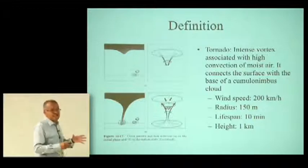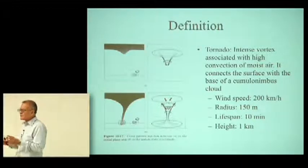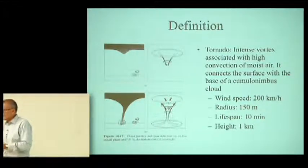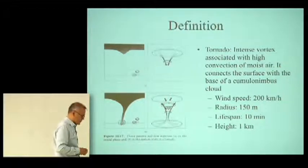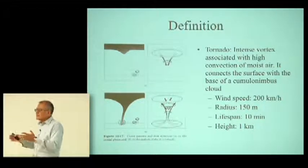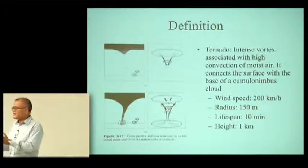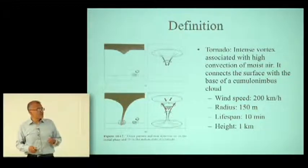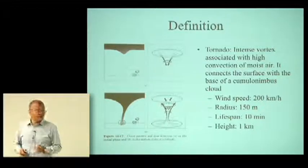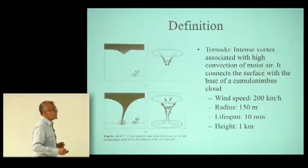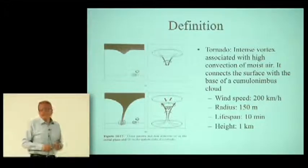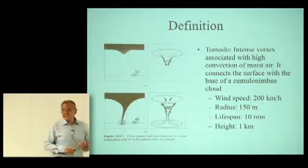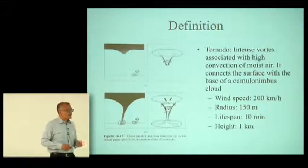As soon as you start looking at things very carefully you see that every definition is a little ambiguous — there are some things that might be discussed, and real phenomena sometimes fit very well within your definition but sometimes are borderline. This is a very simple definition of a tornado: it's an intense vortex associated with high convection of moist air, and it has to connect the surface with the base of a cumulonimbus cloud. If there is no connection, we don't speak about a tornado — maybe a funnel cloud — but not a tornado.